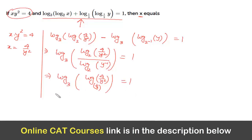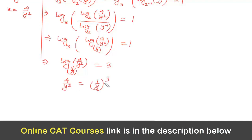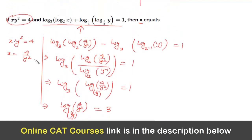Taking anti-log both sides, we get log base (1/y) of (4/y²) = 3, so 4/y² = (1/y)³ = 1/y³. Solving this equation gives y = 1/4. Substituting back into x = 4/y², we get x = 4 ÷ (1/4)² = 4 ÷ (1/16) = 64. So the value of x is 64, and that is the answer.